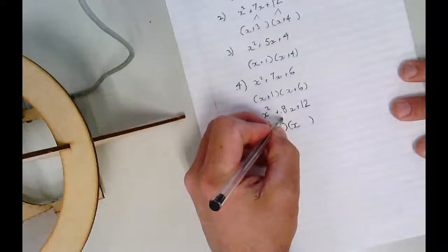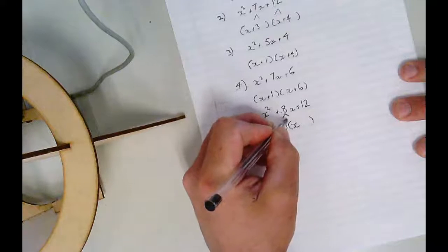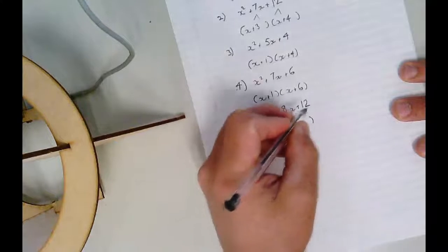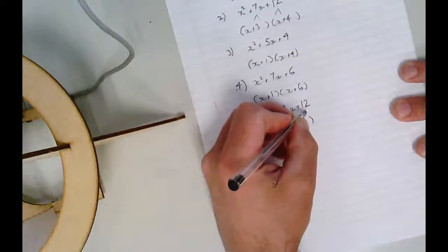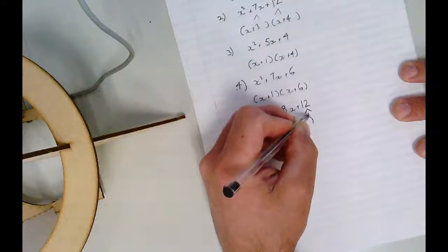Now, for the other two, we need two numbers. Now you add them together, and they make 8. Positive 8. And then you times them together, and they make 12.